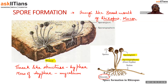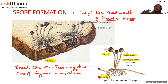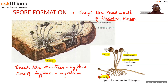The spores are tiny little fruiting bodies which contain all the genetic information and develop into a new individual. When the sporangium bursts open, these spores can travel to longer distances with the help of wind and air, which is why fungi are capable of spreading very fast within a short period of time.